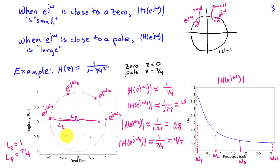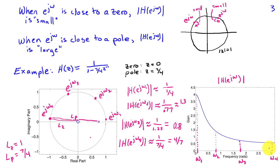Finally, as we get near ω equals π — say at ω₄ — the distance to the zero remains at 1, but the distance to the pole approaches seven-fourths. Consequently, the magnitude of H(e^{jω₄}) becomes approximately four-sevenths as we get close to π. By studying the distances from the unit circle to the poles and zeros as we vary frequency from zero to π, we gain a lot of insight into the nature of the frequency response magnitude of the system.